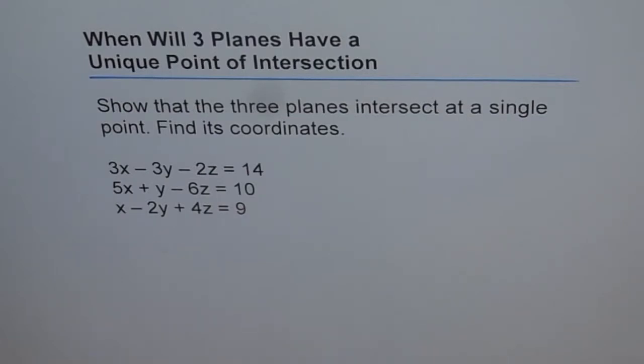So we have the equation of three planes here. 3x minus 3y minus 2z equals 14, 5x plus y minus 6z equals 10, and x minus 2y plus 4z equals 9. Now we need to figure out if they will intersect at a point or not.